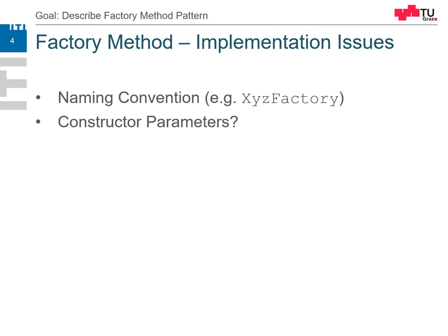How do we provide parameters? Should we provide the same parameters as the constructor of the object? What if we need something more — some configuration which is done directly after construction? What if the constructor changes? Should we define an interface for everything — duck typing? Or should we define a universal god interface which provides everything?